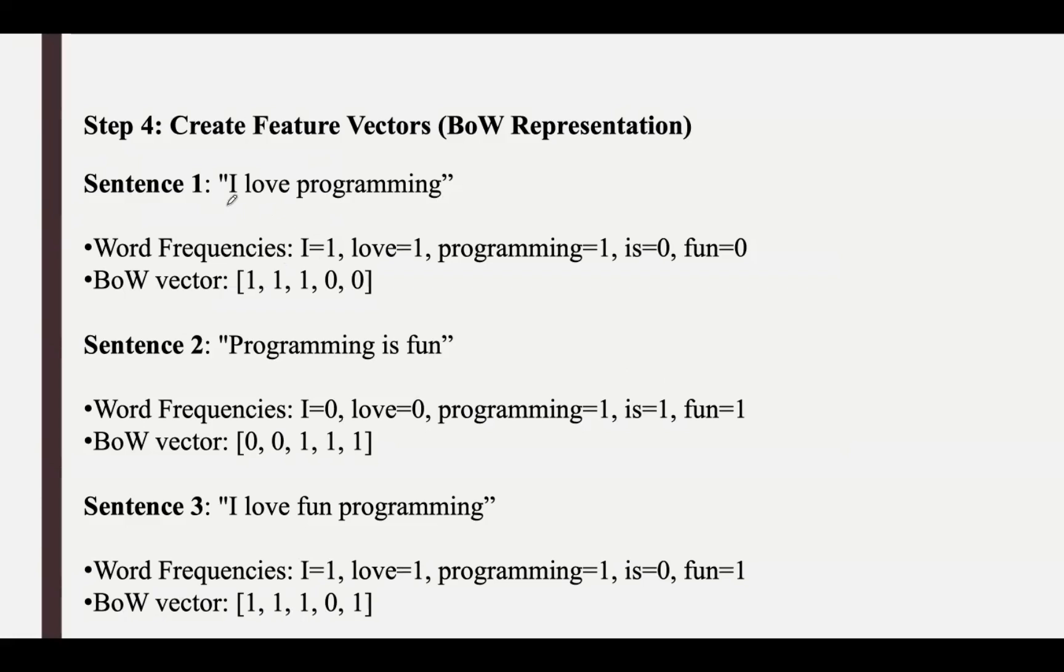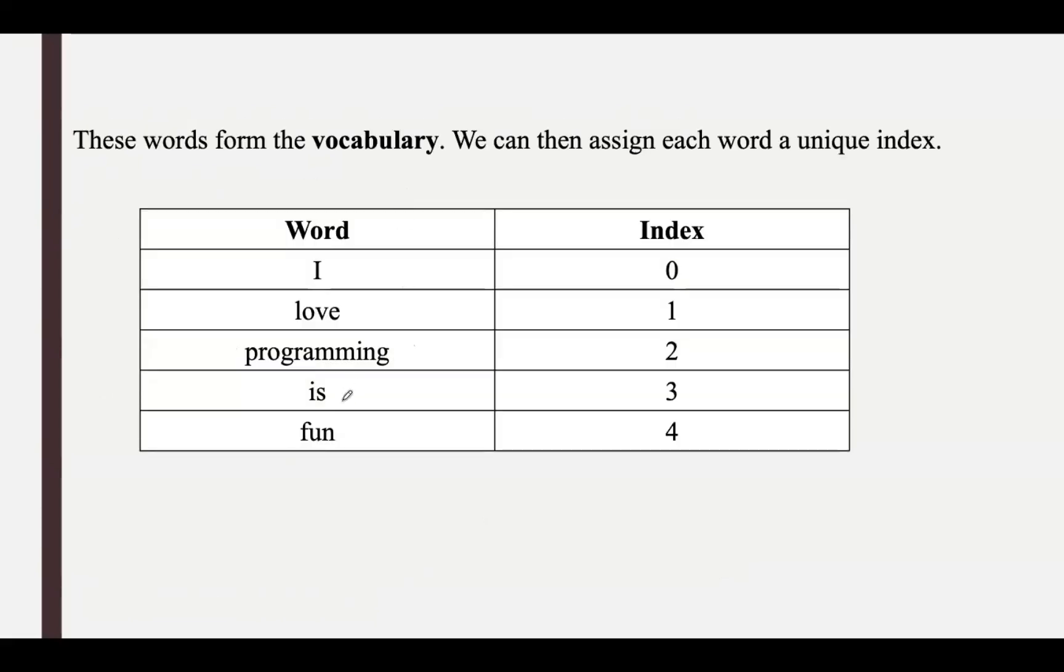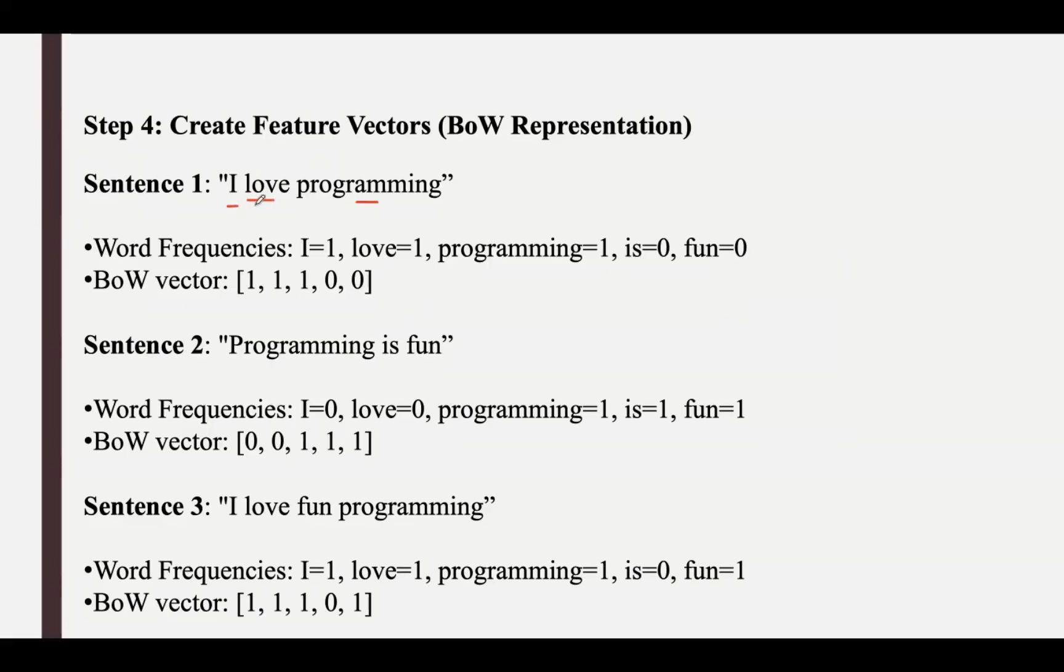For 'I', it occurred only once. Love occurred once. Programming also occurred once. Whereas the remaining words in the vocabulary, like 'is' and 'fun', have not appeared at least once in the sentence, so their value becomes 0. This is the vector representation for this sentence. For the first 3 words, as they are present in the sentence, we place 1. For the remaining 2 words, as they are not existing in the sentence, we replace those values with 0.